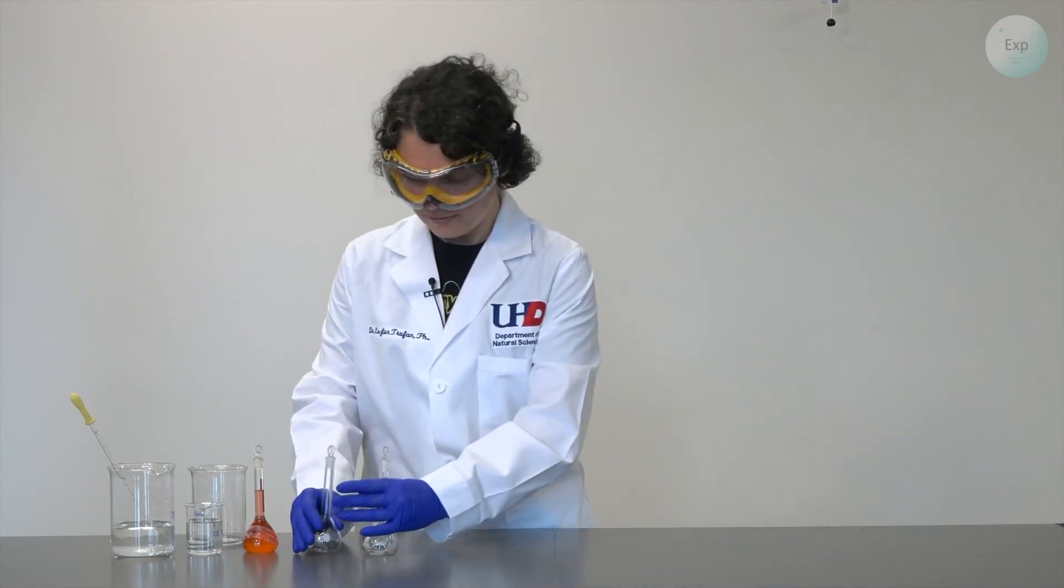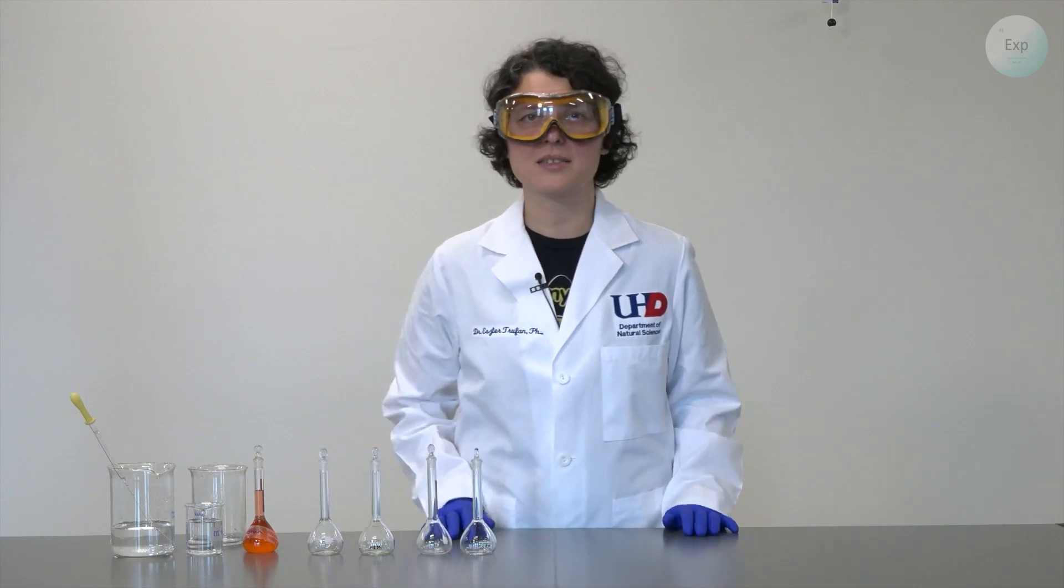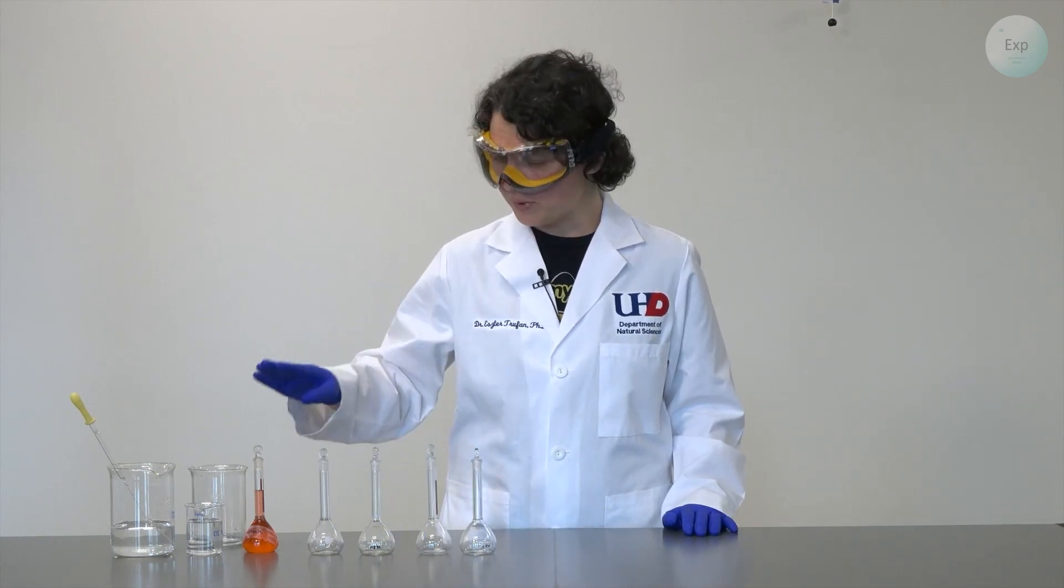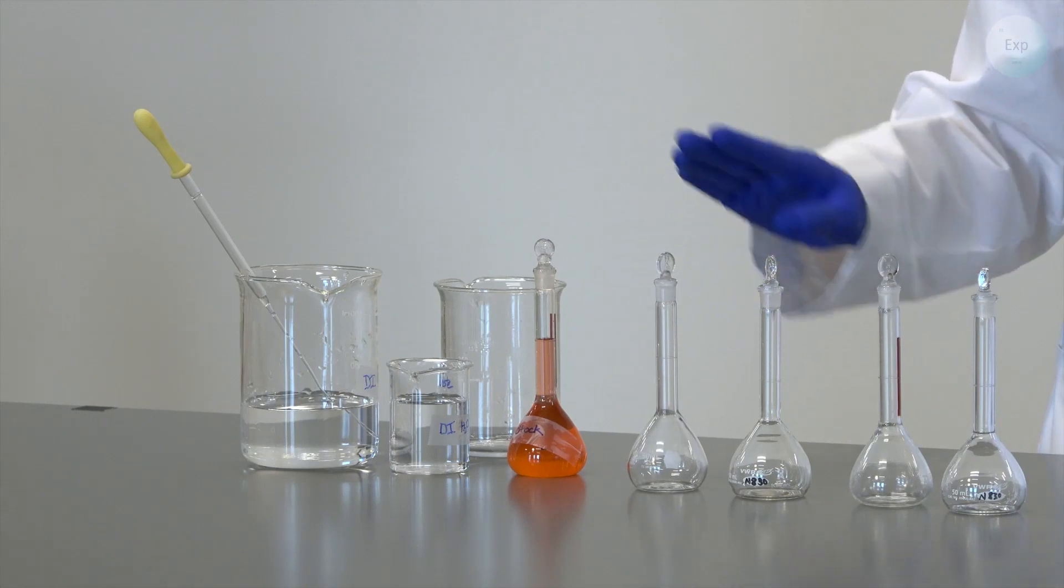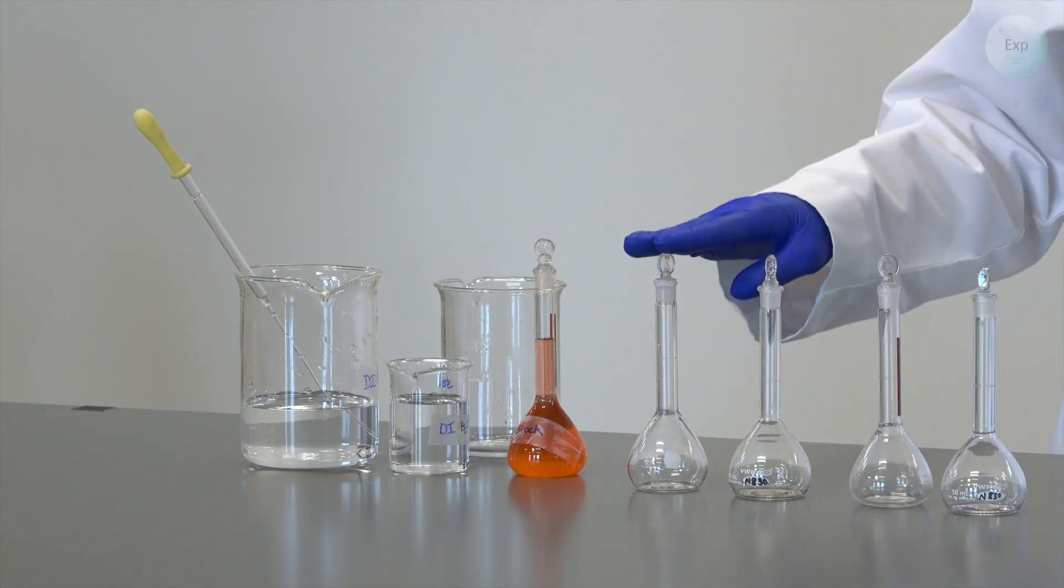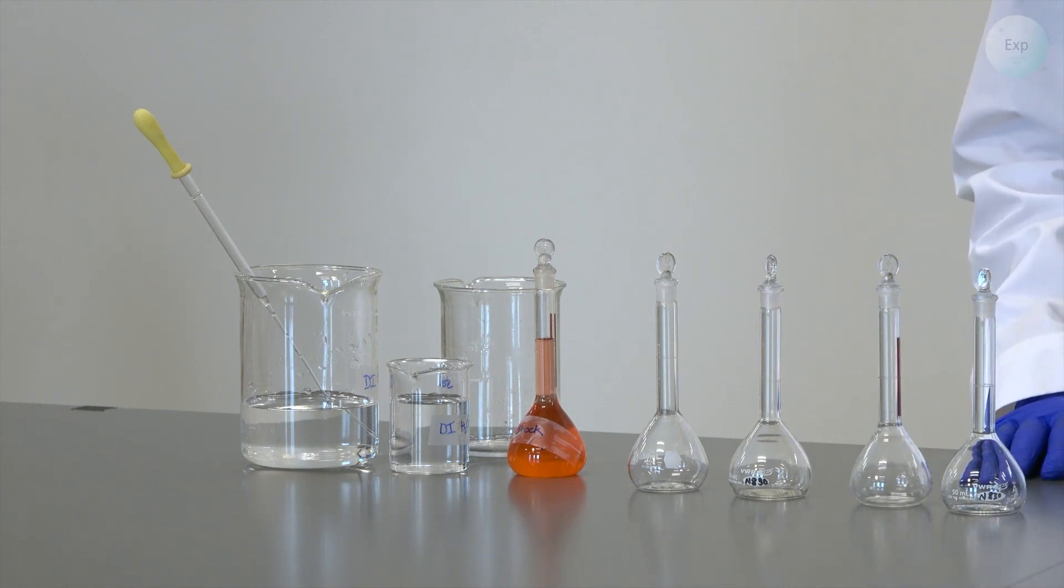I will perform four dilutions in a process that we refer to as a serial dilution, which means I will be using the same amount of my solution, pour it into the next volumetric flask, fill it up to the marking, homogenize it, and use the same amount over and over again as we perform the serial dilution steps.